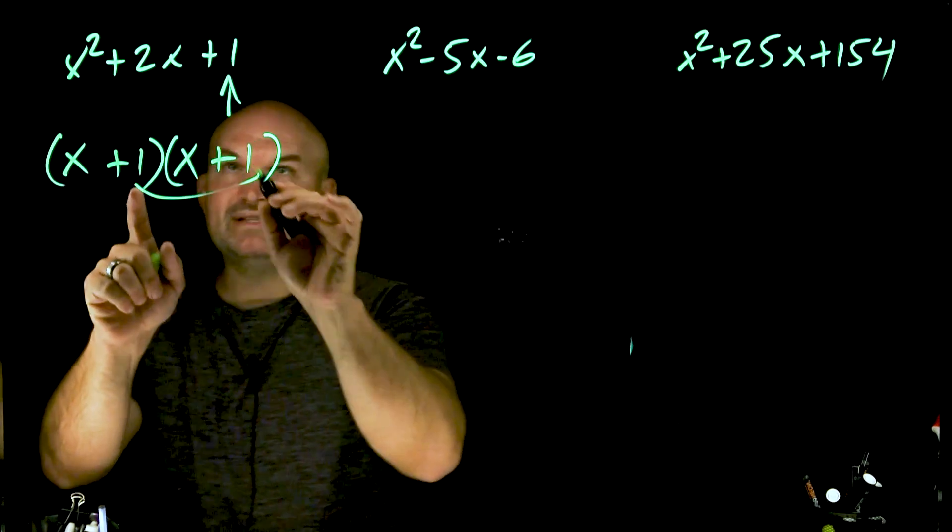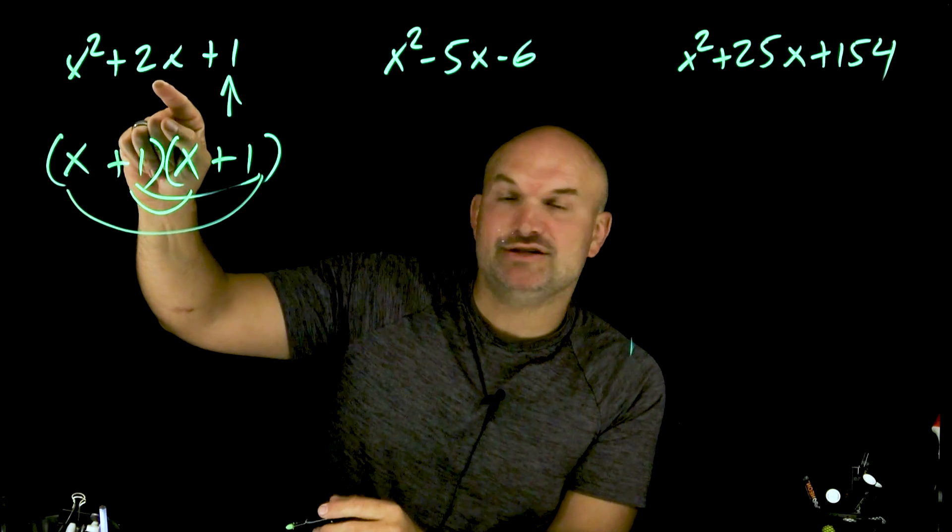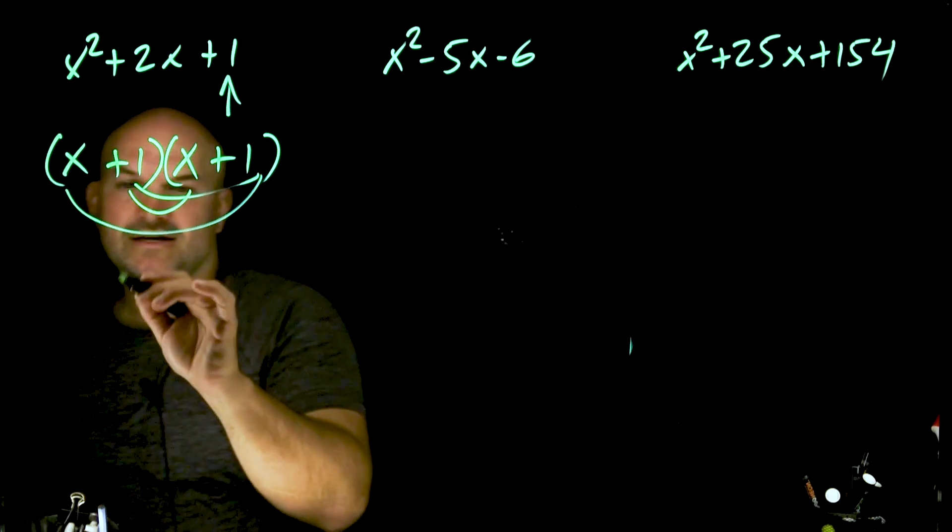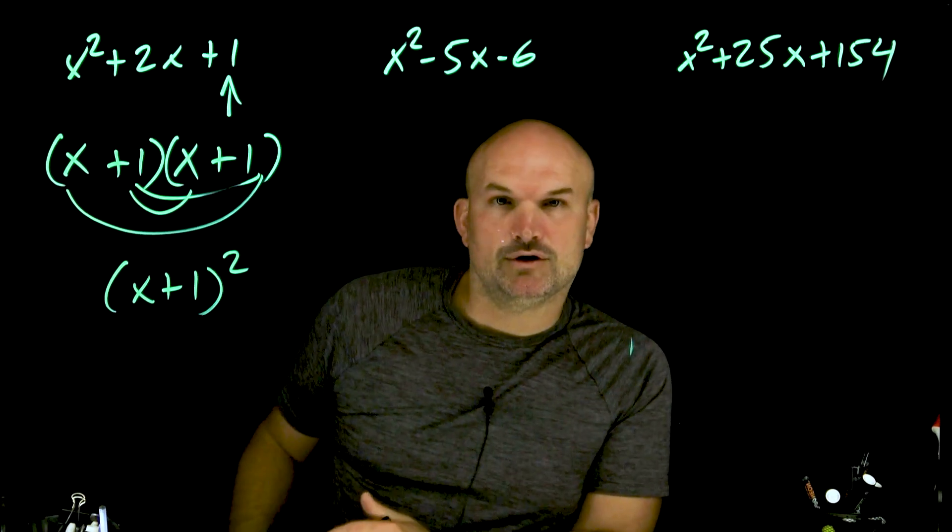Because 1 times 1 gives me 1, and when we multiply the inner and the outer, those combine to give us a 2x. Now we can simplify this further and write it as (x + 1)².